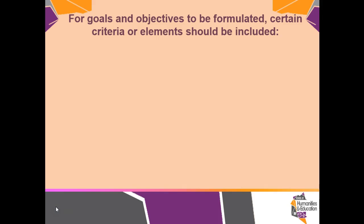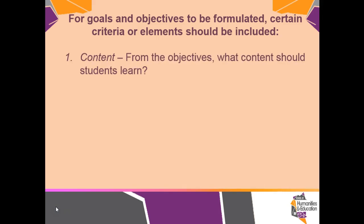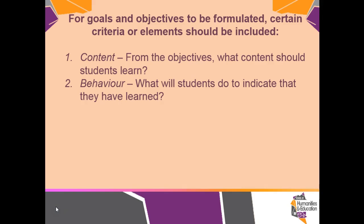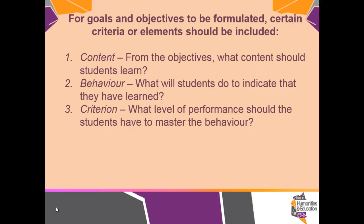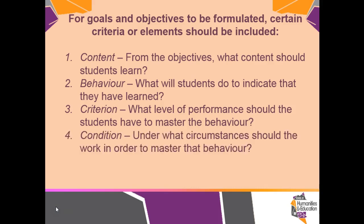Before goals and objectives are formulated, certain criteria or elements should be included. These are: content from the objectives — what content should the students learn? Then behavior — what will students do to indicate that they have learned? Then the criteria — what level of performance should the students have to master the behavior? And lastly, conditions — under what circumstances should they work in order to master that behavior? So as we prepare our objectives for our lessons, these four elements of criteria must be part of those outcomes that we write.